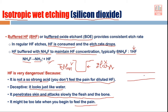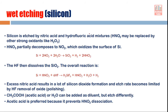Because the etching is isotropic, it takes place equally in all directions, so lateral etching also occurs. The etching profile will be rounded — not straight vertical walls. Once you remove the photoresist from the top, you get this kind of rounded profile. Now let's discuss etching of silicon using wet etching.